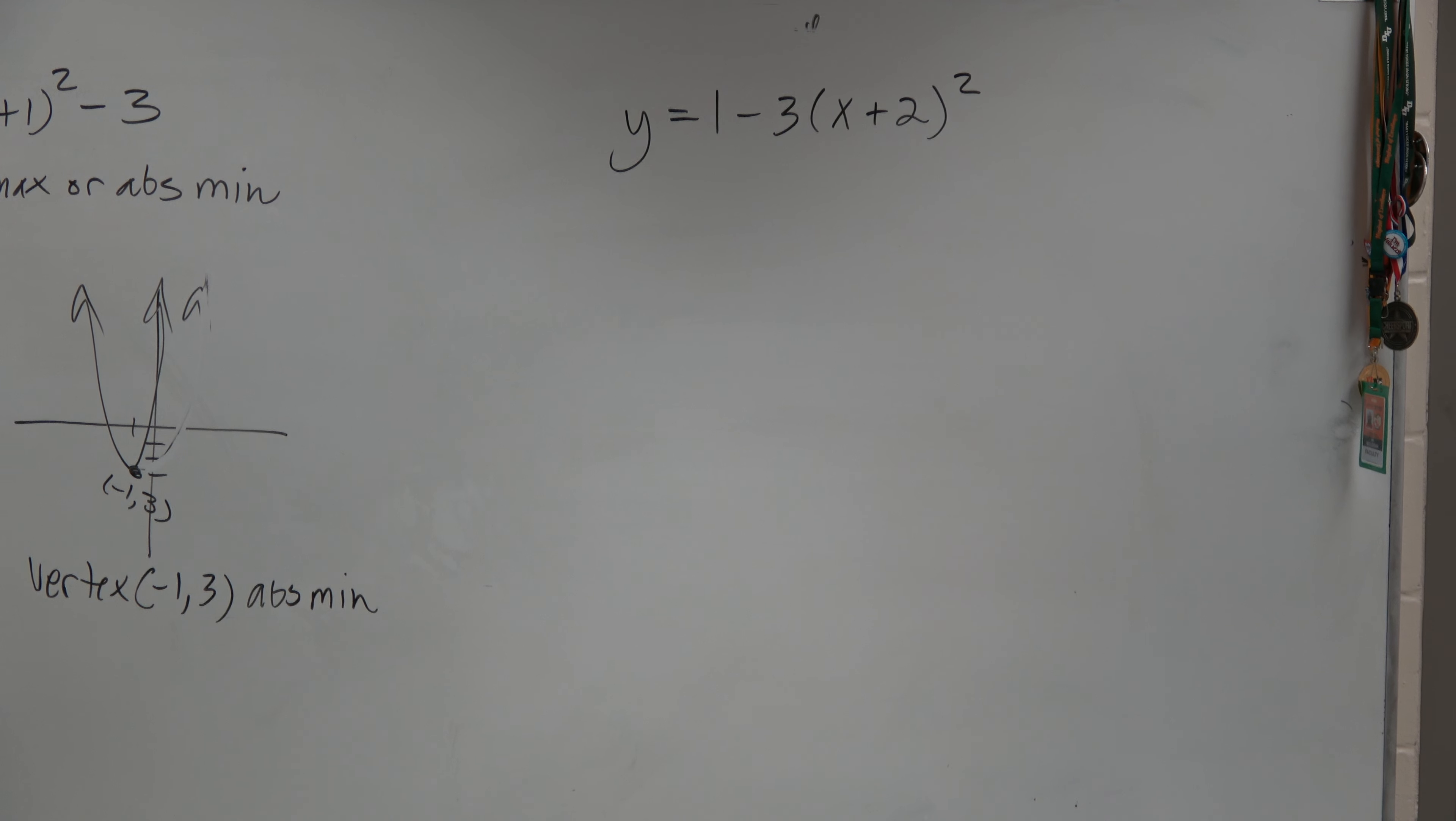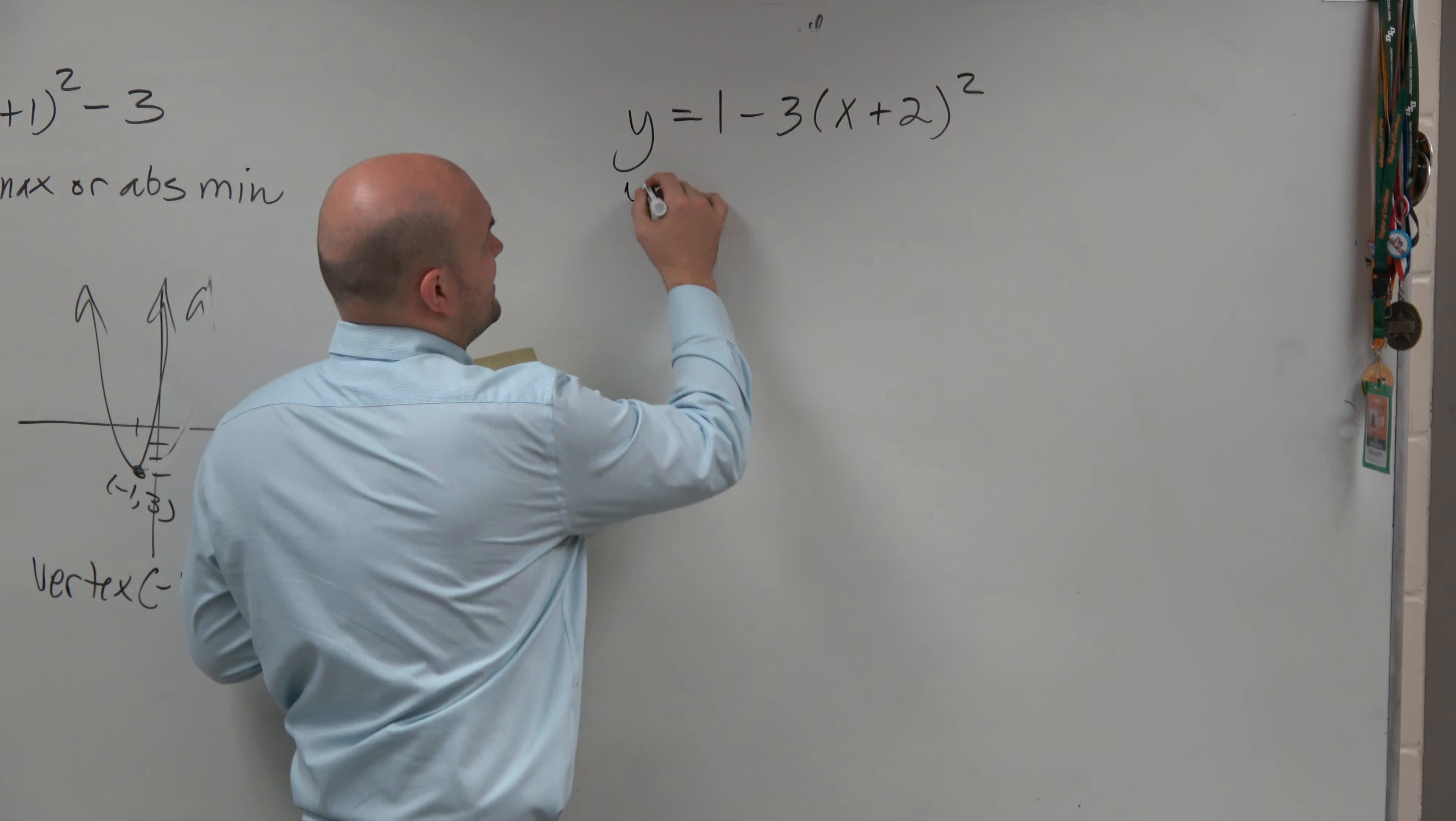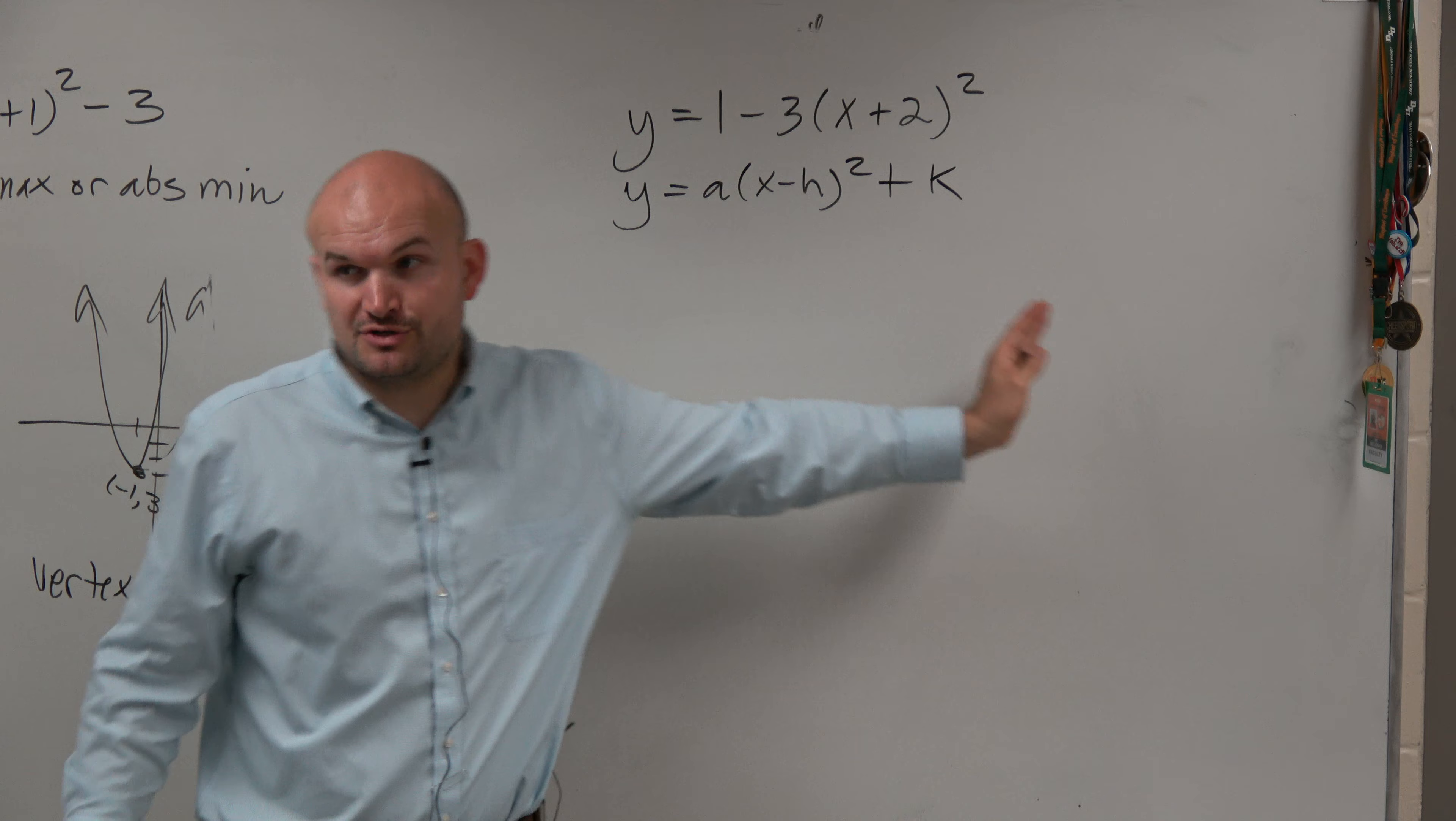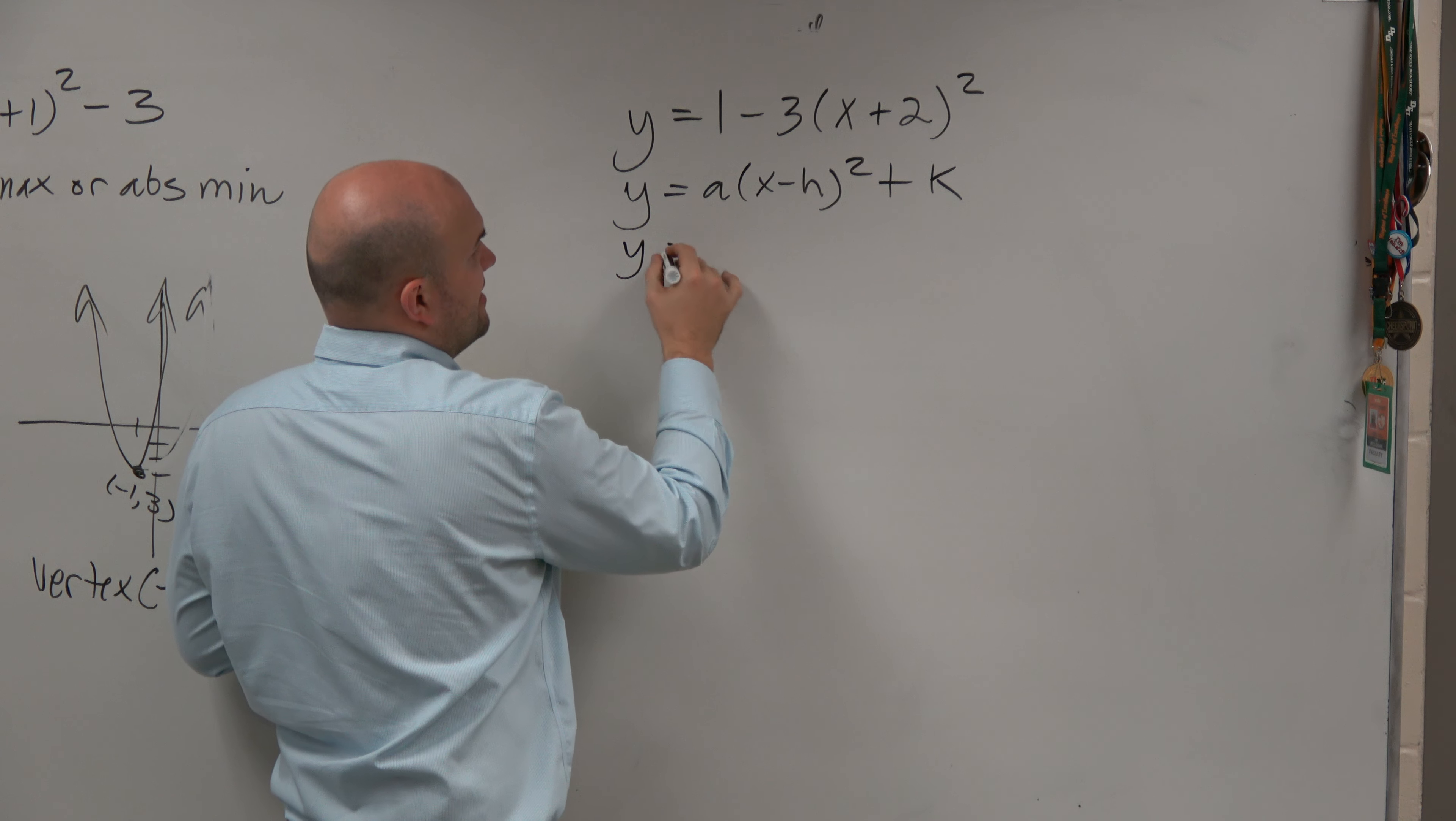Here's another example for you guys. How do you find this one? Well, again, the same thing. The best thing I would do is rewrite this in the format that we know. That's the form we've been talking about for transformations of all our parent functions. So I would rewrite this in that form.